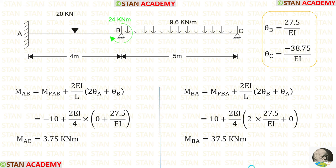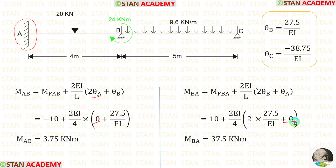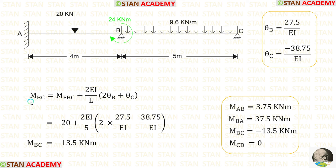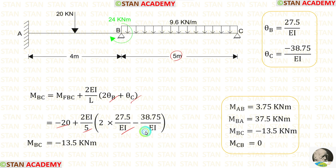Now let us make the slope deflection equations and find the final moments, starting with span AB. Applying the fixed end moments and L = 4 m, and noting that at fixed support A, theta A = 0, we substitute the value of theta B to get M_AB and M_BA. For M_BC, with L = 5 m — no need to find M_CB since C is a simply supported end — applying theta B and theta C gives us M_BC.